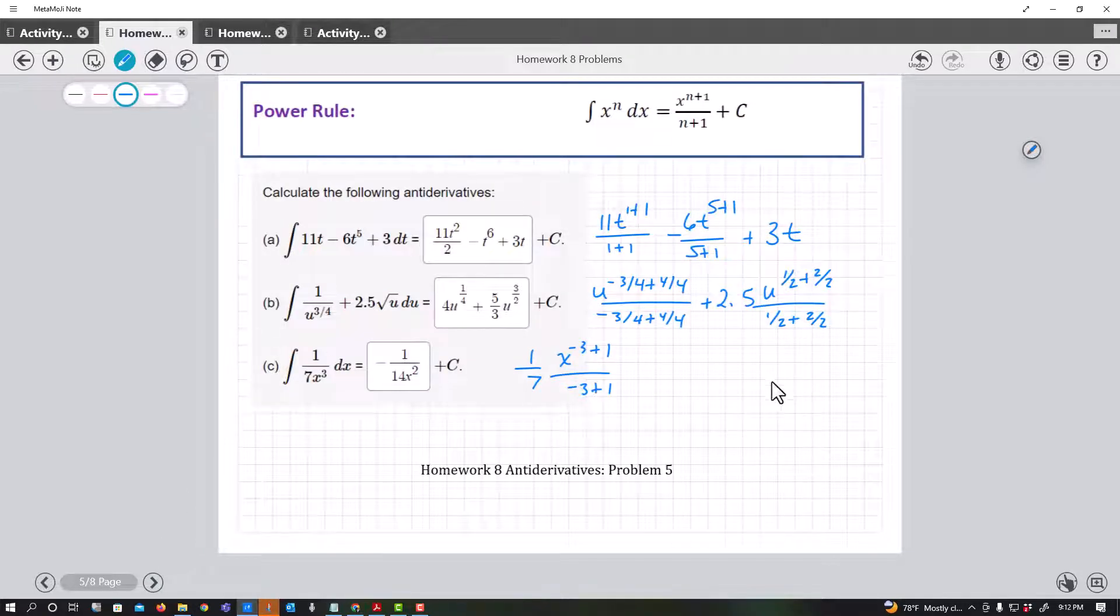This is getting you to understand the power rule. Whenever you have a power, you simply add one: one plus one, one plus one. This had a power of five, five plus one, five plus one. The three, think about, you could actually write this if you wanted a power, couldn't write it as that because anything to the zero power is one. But what I do is I just memorize anything with just a number alone, you put the variable on it, because when you take the derivative of 3t you get three. Just be careful.